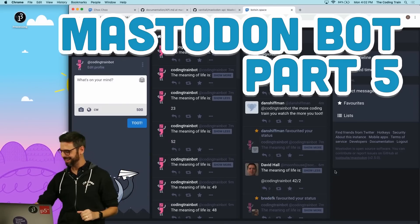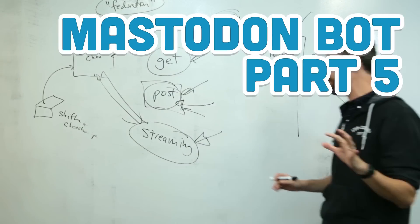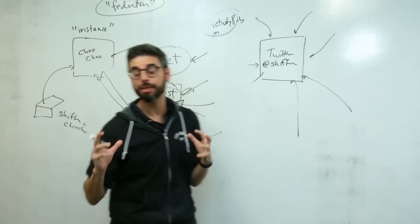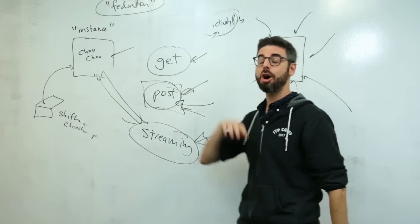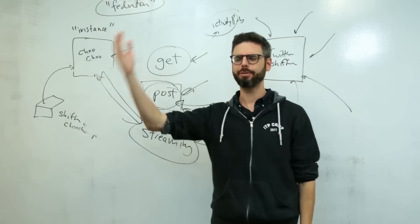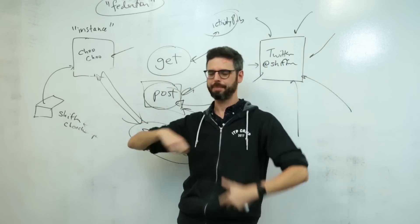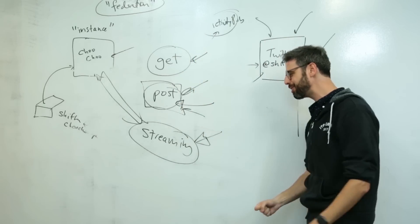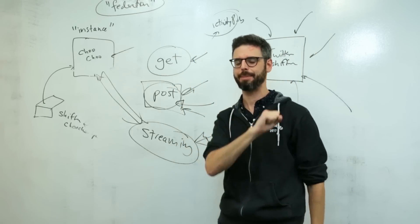I'm still working with Mastodon and what I'm going to do in this video is take the sample bot that I made and instead of just posting on a timer every 24 hours or every 60 minutes, I'm going to use the streaming API.